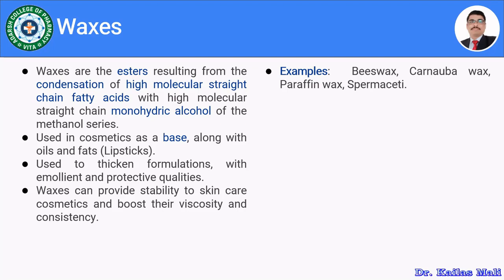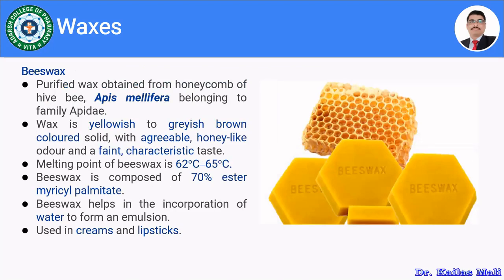The first wax is known as beeswax. Beeswax is a purified wax obtained from the honeycomb of the honeybee, Apis mellifera, belonging to the family Apidae. If you look at the color of the wax, it is yellow to grayish brown in color, a solid with an agreeable honey-like odor and a faint characteristic taste.